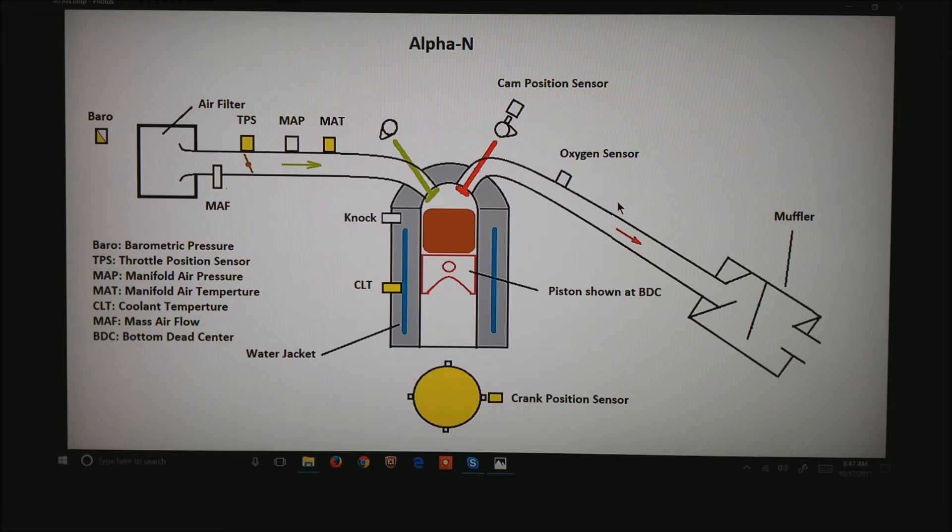The first one I'd like to talk about is Alpha N. This is your basic engine. We'll see this drawing several times today. Alpha N is a method that was created back in the 70s, I believe by Morelli for Ferrari, probably for the Formula One cars, possibly for the street cars.